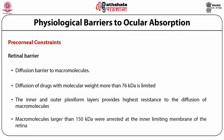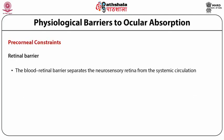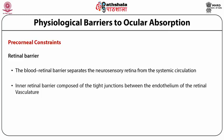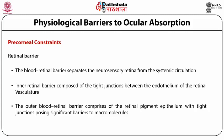The blood-retinal barrier separates the neurosensory retina from the systemic circulation. The inner blood-retinal barrier is composed of tight junctions between the endothelium of the retinal vasculature; fluorescently labeled dextrans of size ranging from 3 to 150 kDa were not detected when tested for permeation across it. The outer blood-retinal barrier comprises the retinal pigment epithelium with tight junctions, which pose significant barriers to macromolecules.